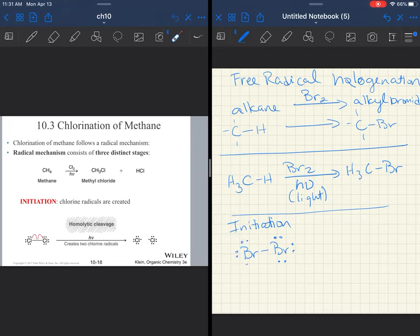Now, the first step, the initiation, it is a homolytic cleavage. Methane is not involved in step one. Step one is just your halogen. It is critical that you put the light in this step because this does not happen in the dark. This has to be initiated with light.